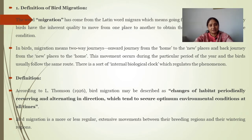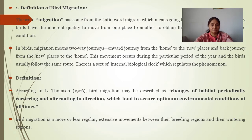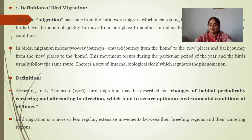Regarding the definition, Thompson defined bird migration as 'a change of habitat periodically reoccurring and alternating in direction, which tends to secure optimum environmental conditions at all times.' Some birds do not face stressful conditions in their life. Bird migration is a more or less regular, extensive movement between their breeding region and their wintering region.